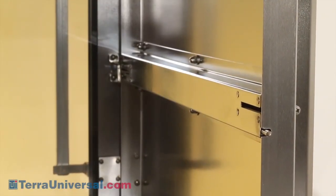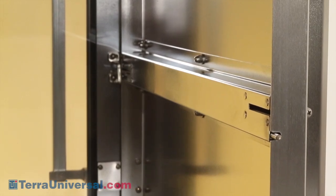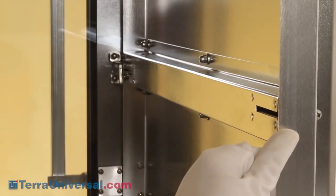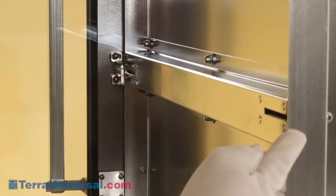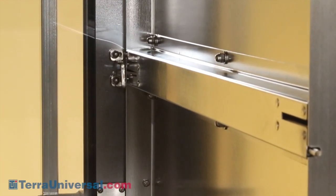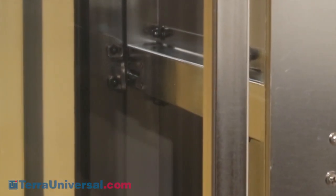Like Terra's other pass-throughs, these models feature interlocked doors that prevent cross-contamination during parts access. The heavy gauge mechanism is rated for millions of operations and resists heavy use and abuse.